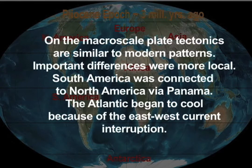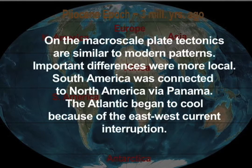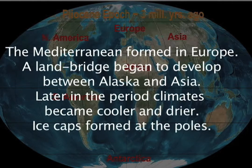On the macro scale, plate tectonics are similar to modern patterns. Important differences were more local. South America was connected to North America via Panama. The Atlantic began to cool because of the east-west current interruption. The Mediterranean formed in Europe.